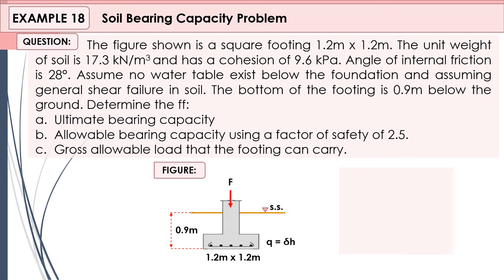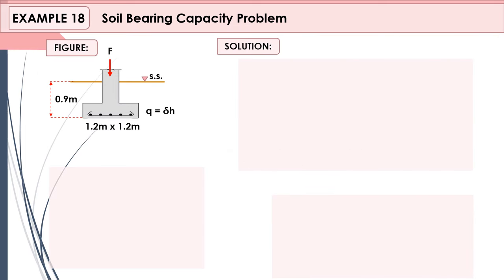The bottom of our footing is 0.9 meters below the soil surface, so our surcharge q is equal to γH. The internal angle of friction is 28 degrees as given, and the values of Nc, Nq, and Nγ are given for general shear failure.